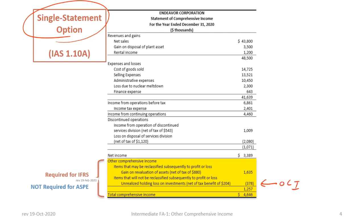The title for the Single Statement option is Statement of Comprehensive Income. The presentation of Other Comprehensive Income is shown only for IFRS, and therefore the content and approach contained in this tutorial is applicable to IFRS only.